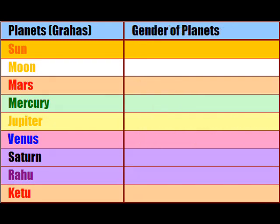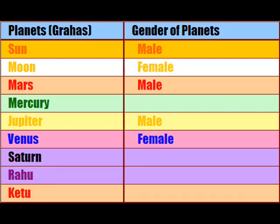This chart contains the gender of the planets. The Sun, Mars and Jupiter denote male gender. Moon and Venus denote the female gender. Mercury and Saturn are neuters.